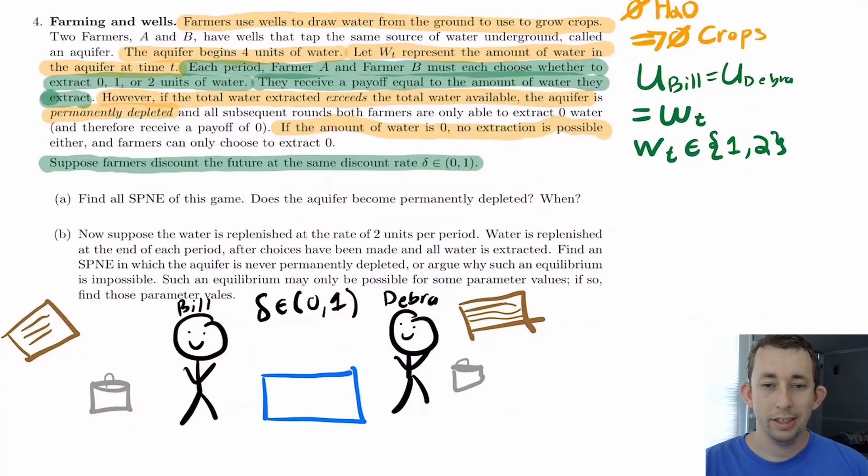So here is just an example. You're presented with this problem and you are trying to solve this problem. First, let's walk through the problem and think about how we can translate this into a picture in our heads. Right off the bat, you can see that we've named this game farming and wells. Most professors will name their games to give you a sense of what's happening. So I'm already picturing maybe a farmer, a field and a well. And we'll go ahead and keep reading - it says that farmers use wells to draw water from the ground to use to grow crops. Okay, well, that automatically tells me it's probably the case that zero water means zero crops. So I need water to grow crops.